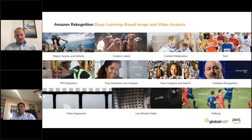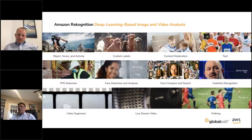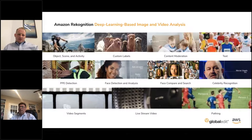Content moderation: Rekognition will automatically remove and flag offensive or not-safe-for-work content. It can recognize text — like a runner's number in a video — and figure out the numeric value. It has a database of celebrities, so any person in the actor and actress database on IMDB will be identified. It can also track pathing — following a sporting event and tracking a particular athlete. And it works on live streaming video too — it can recognize objects as video is live-streamed.